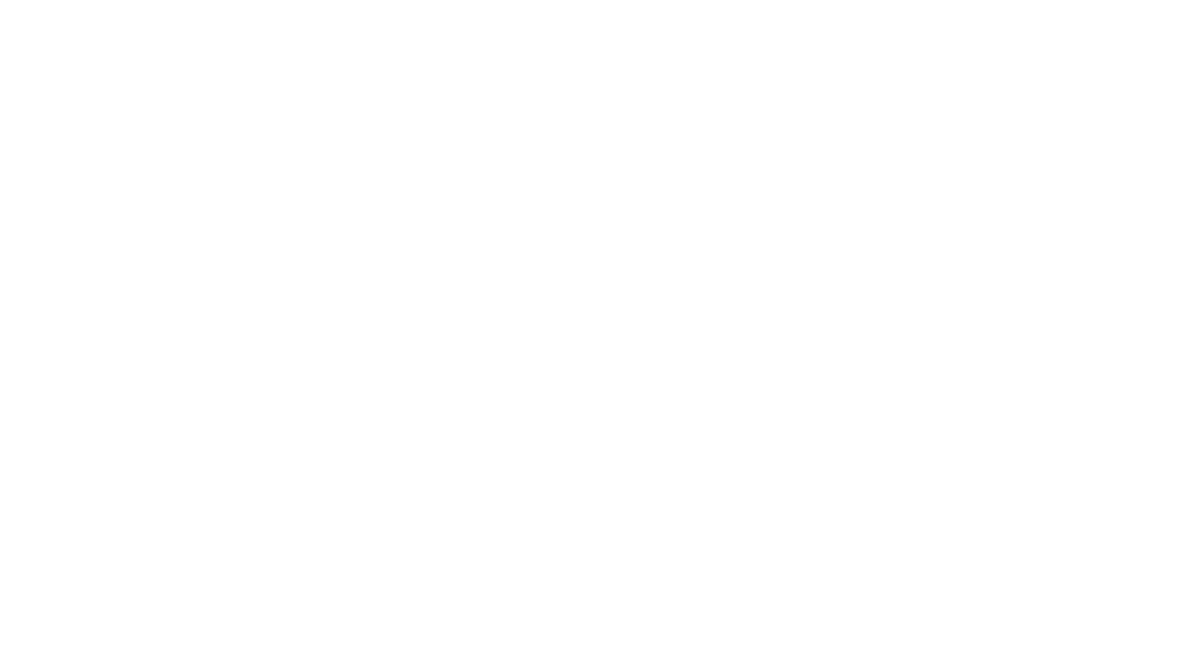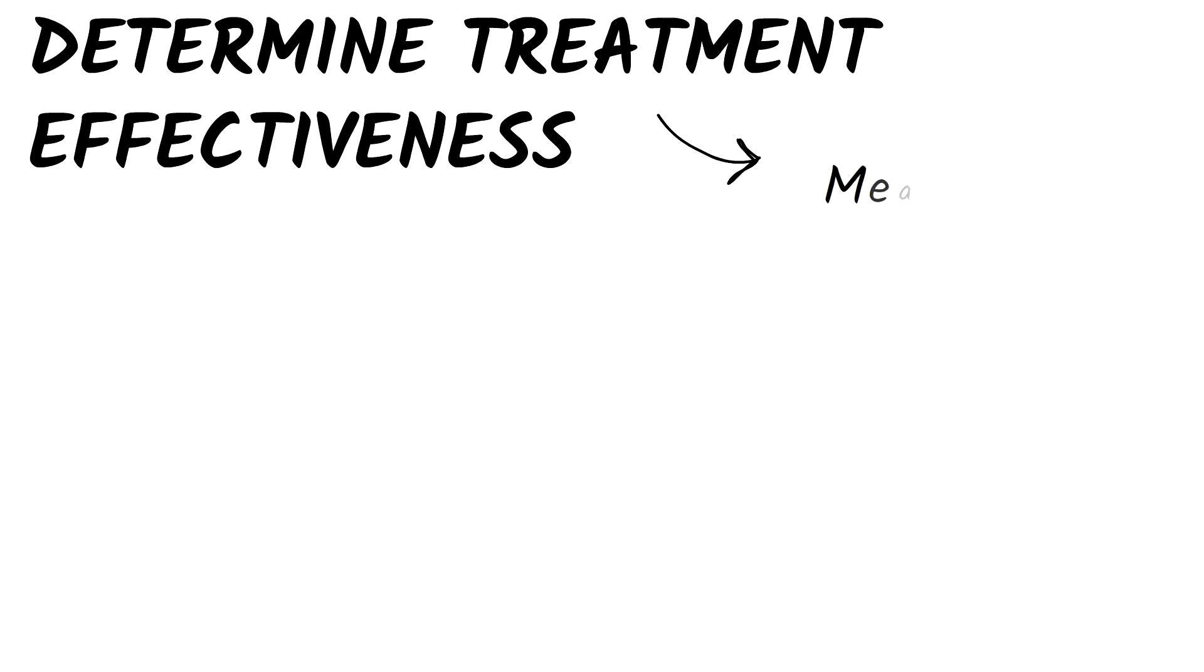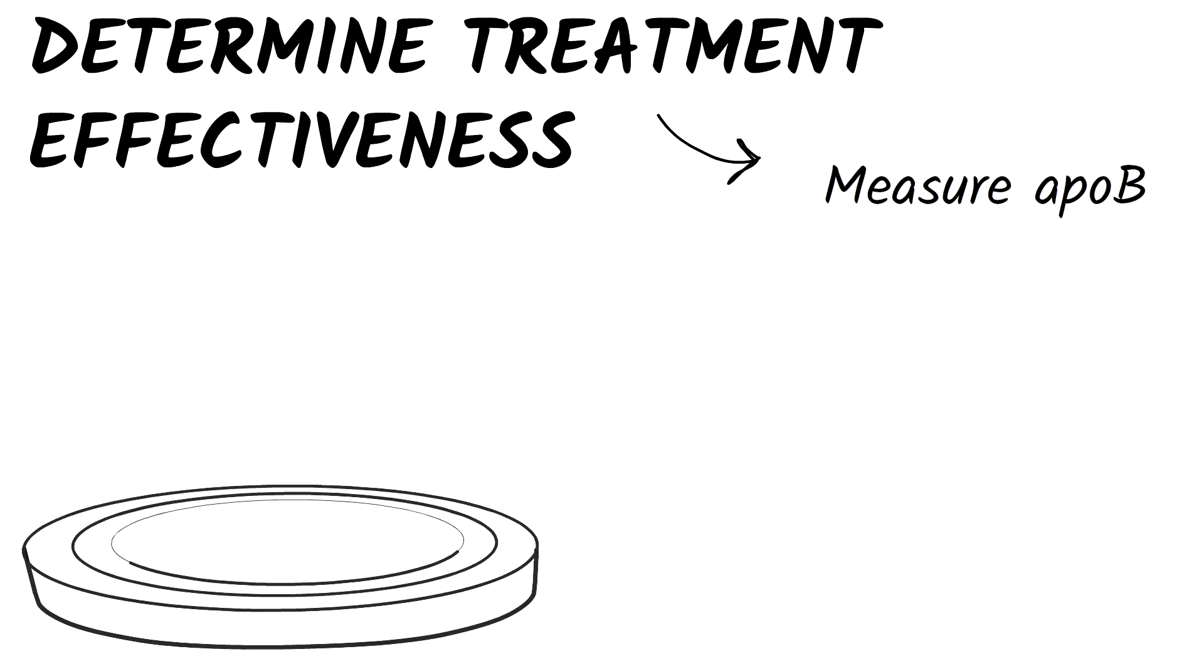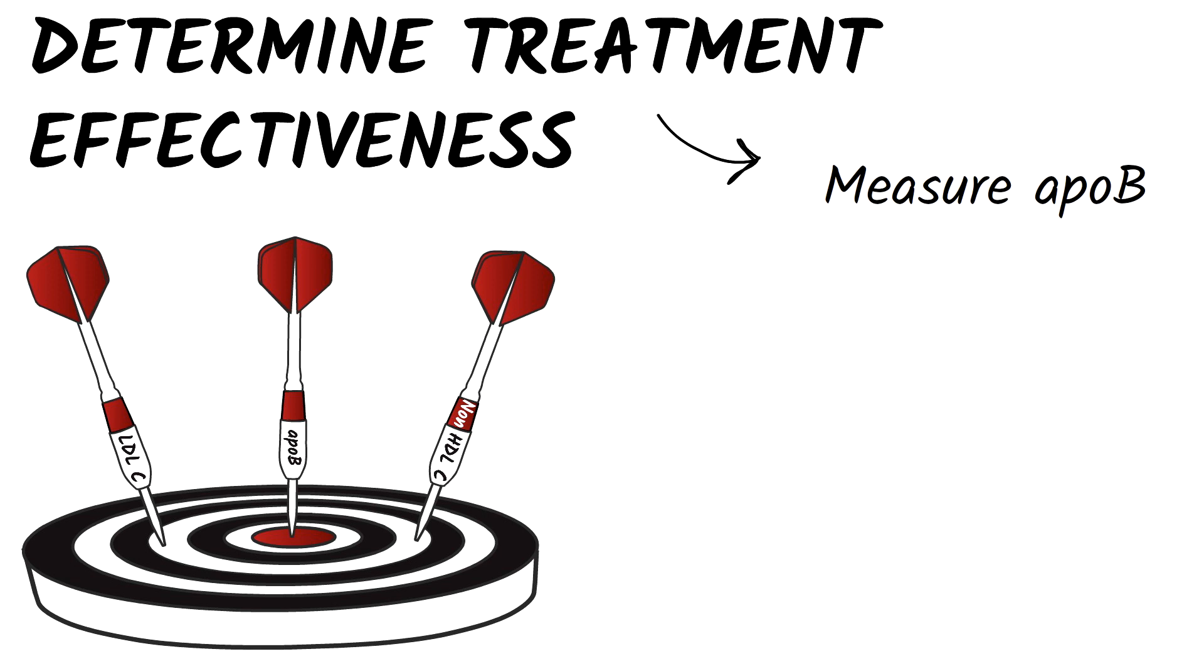Given these three forms of treatment, how do you judge the effectiveness of the course you've chosen? You measure ApoB to assess your patient's response to therapy. Why? Because ApoB can be measured more accurately than LDL-C or non-HDL-C, particularly at low levels.